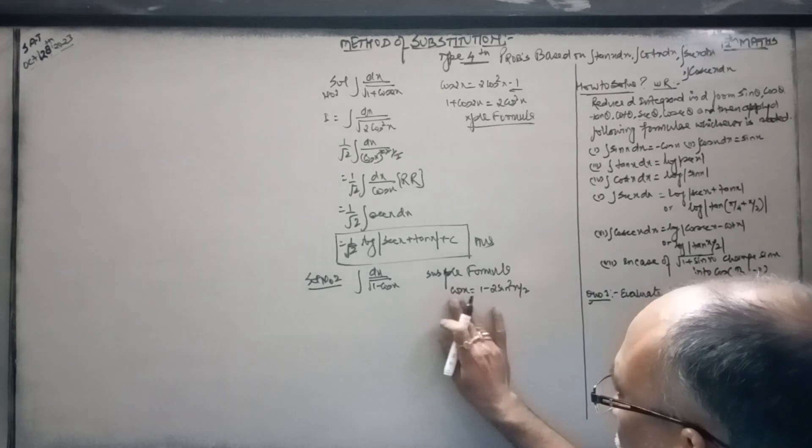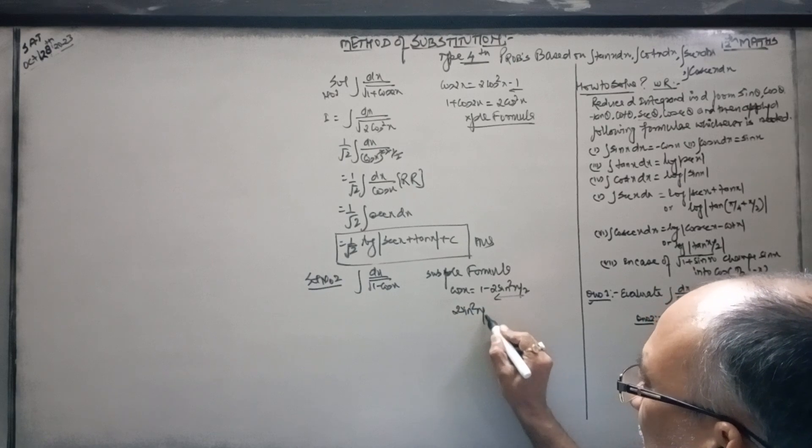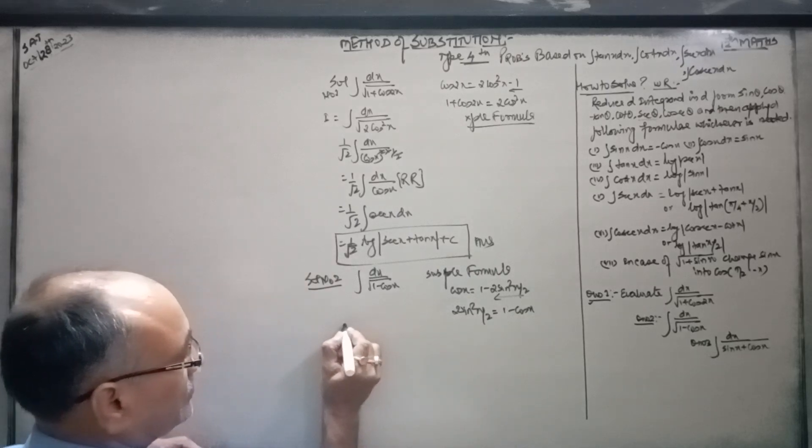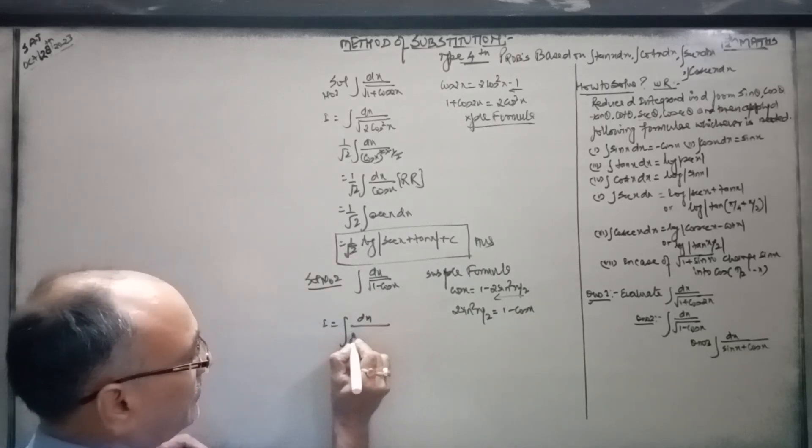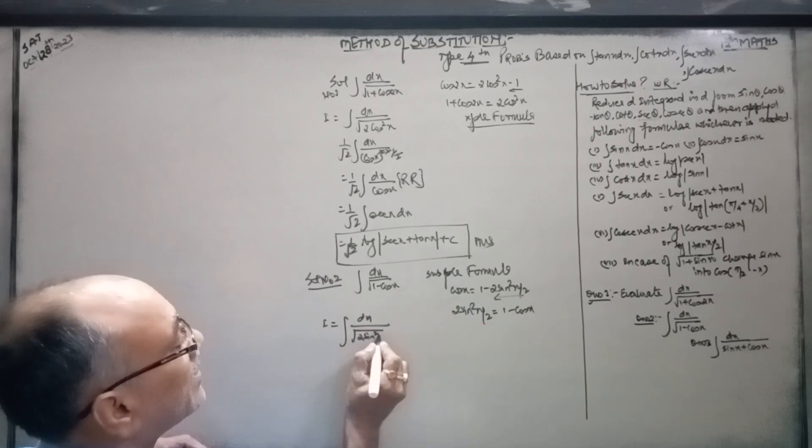Now, I have transferred to 2 sin square x by 2 and equal to 1 minus cos x. So, this is dx by 2. In place of this, under the square root, we put 1 minus 2 sin square x by 2.